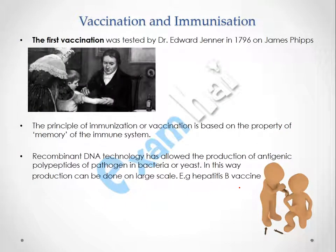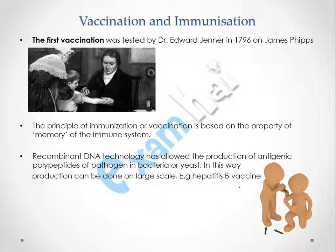Now we will discuss vaccination and immunization. Edward Jenner was the first person who developed the technique of vaccination in 1796, testing it on James Phipps, an 8-year-old child. Jenner belonged to England, and at that time smallpox was epidemic in England, killing many people.